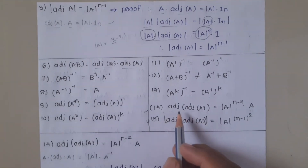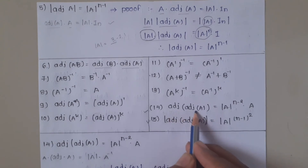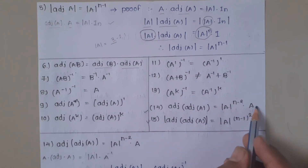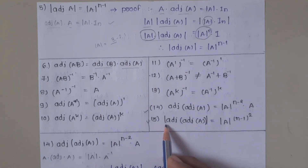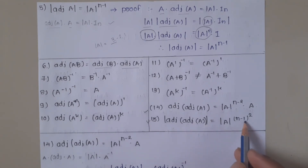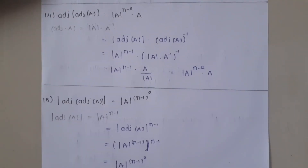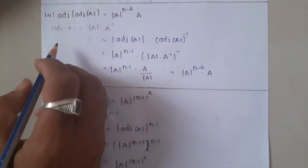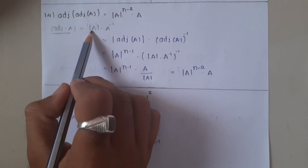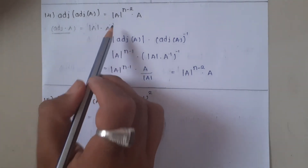Property 14 and 15 are very, very useful properties that you will use a lot going forward. Property 14: Adjoint of Adjoint of A is equal to Determinant of A raise to (N−2) into A. Property 15: Determinant of Adjoint of Adjoint of A is equal to Determinant of A raise to (N−1) whole squared.